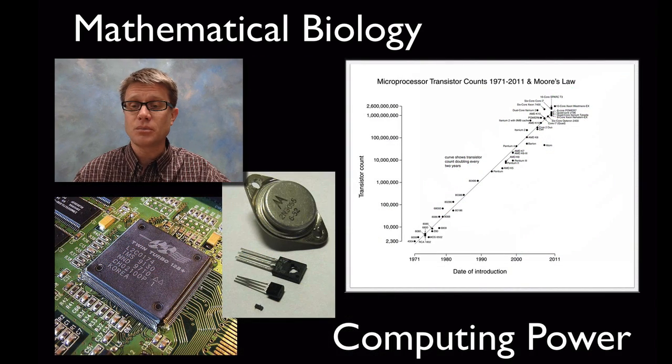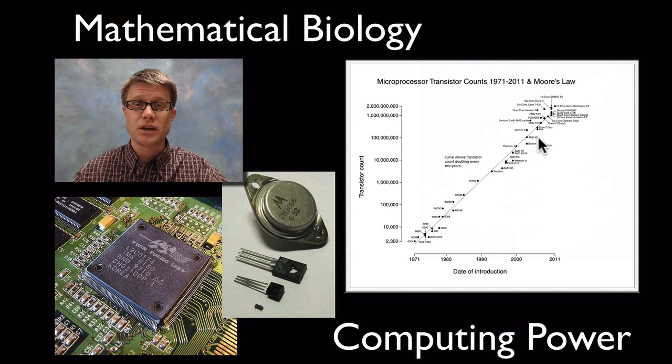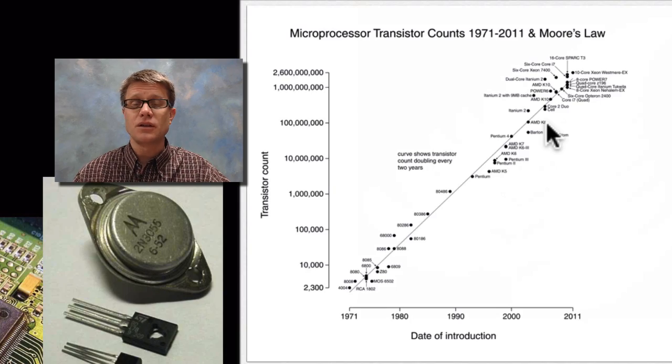We're also seeing an explosion in computing power. This is Moore's law, the idea that every two years the number of transistors on a microprocessor is going to double. That means our computers get faster and faster and cheaper and cheaper over time.